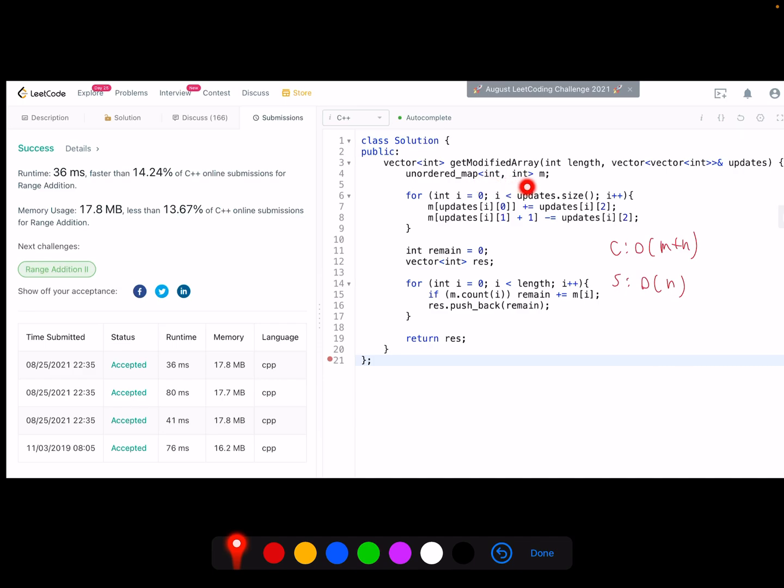So here I have an unordered map. The key is the index I will do some operation on. And the value is we want to add or subtract some value here. So here it goes through the updates in order. Then for each update's key, I either plus the value or minus the value. Here I also update the key for the index plus 1, as the algorithm explained in the previous slide.